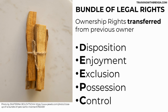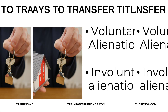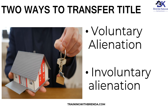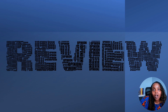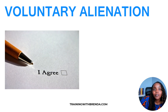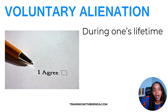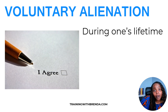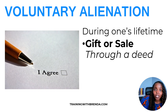The bundle of legal rights offer the opportunity to dispose of the property. That right is broken down into two ways that you can transfer the property: voluntary alienation or involuntary alienation. Voluntary alienation, just like the word sounds, is by choice. You made the choice as to how the property is going to transfer. So during your lifetime, you are going to decide how you're going to dispose of the property along with the rights that came along with it — either give it as a gift or sell it. This is accomplished through a deed.